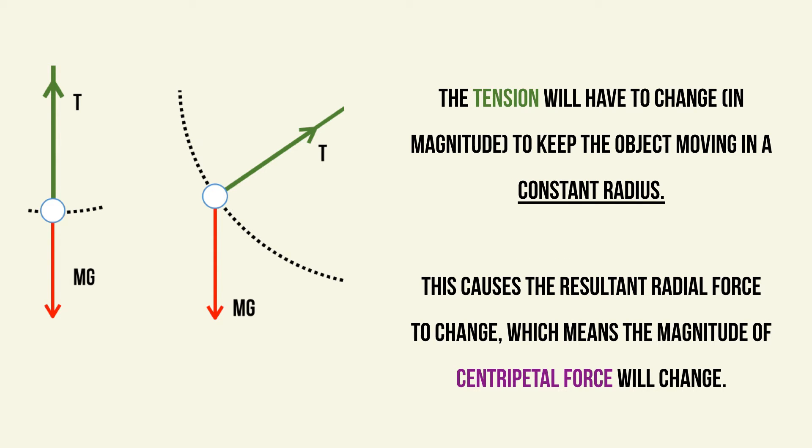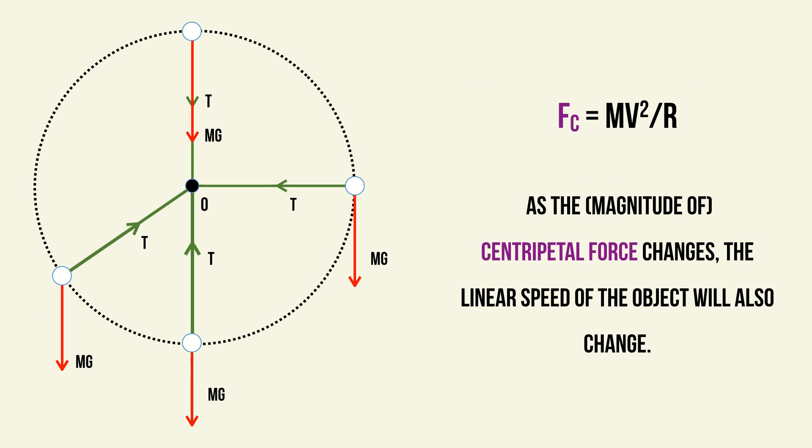Therefore, the tension will always have to change in magnitude to keep the object moving in a constant radius. If the tension does not change, you'll have a situation where the string is either slack or extended. Assuming the string is inextensible, the tension must change. And since the tension changes, this causes the resultant radial force — in the direction towards the center of the circle, which is the centripetal force — to change.